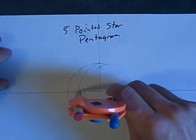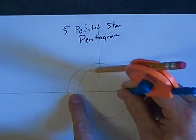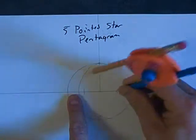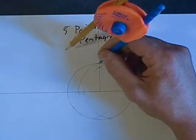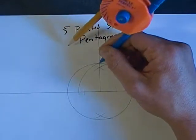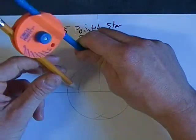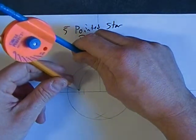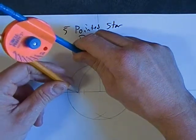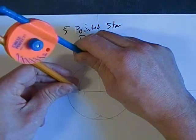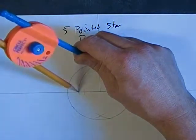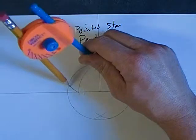Now we're going to take the compass and put it on the top point where the vertical line goes through the circumference, and we're going to bring our compass out again until we cut that arc we just made with the horizontal line.